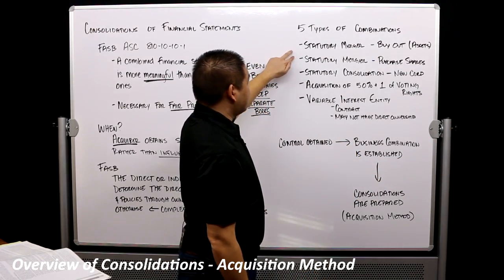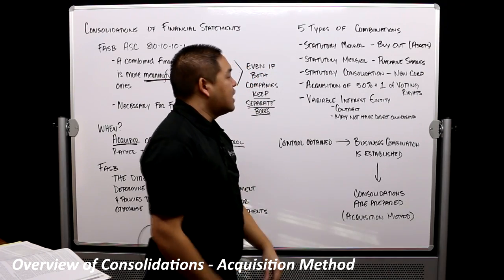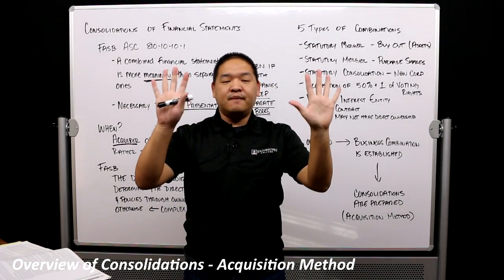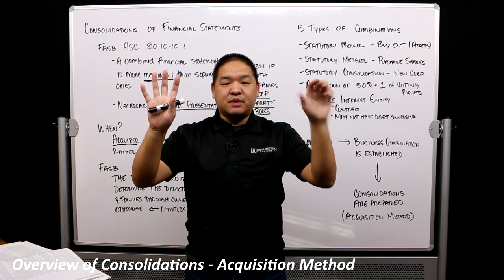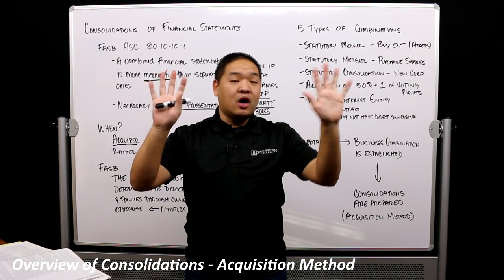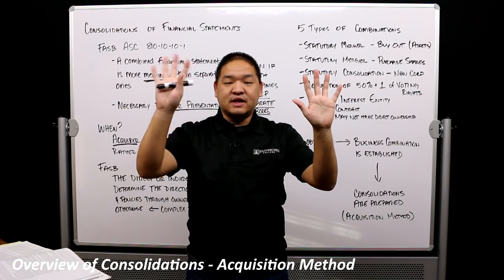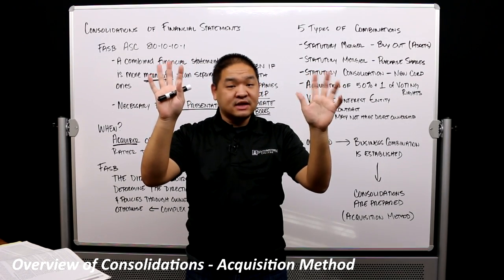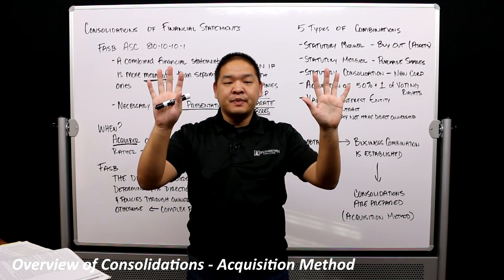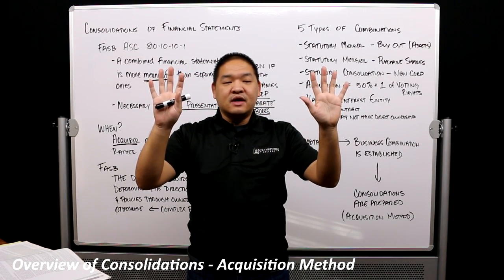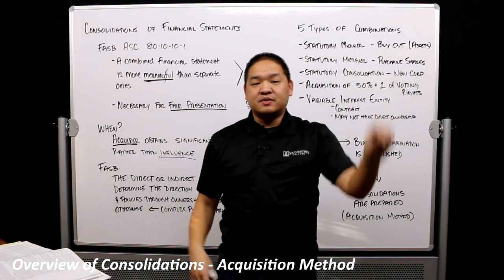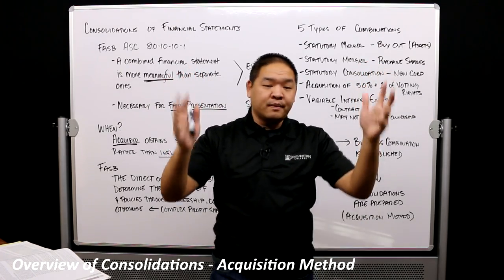The second type is the statutory merger occurring because of purchased shares. Company A wants ownership of Company B, so they buy out all of the outstanding shares of Company B. Once they've acquired all the shares, it's as if they own Company B — 100% of the shares. Typically, all of Company B's assets then go to Company A, and Company B dissolves because it's no longer needed.